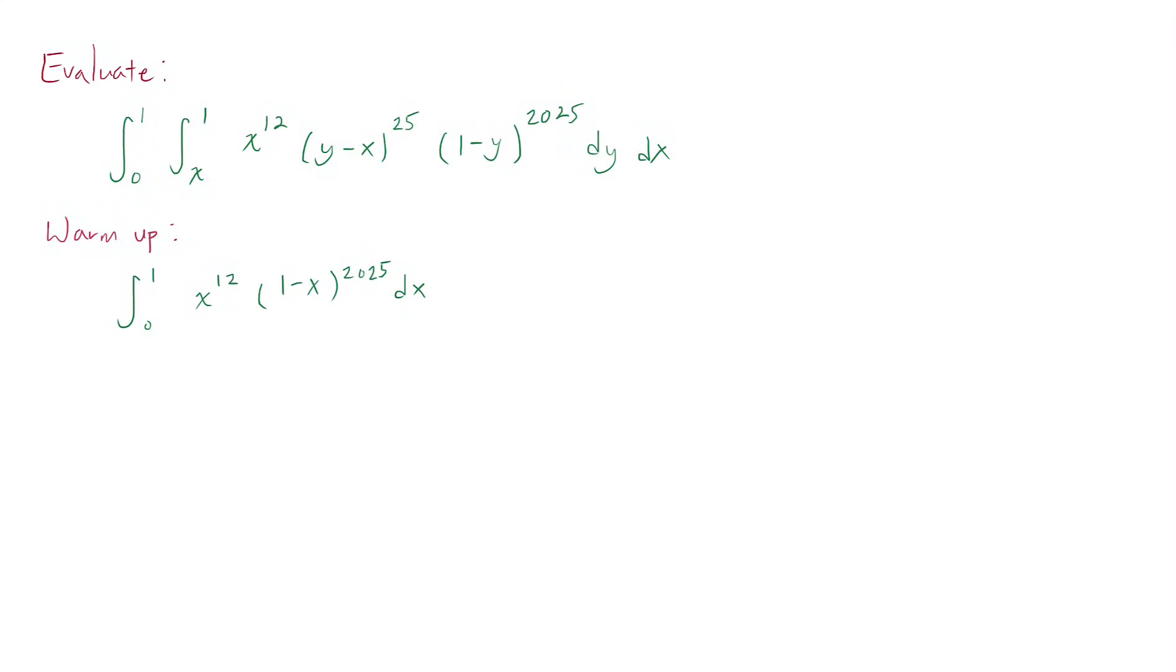Today we are going to try to evaluate this pretty monstrous looking integral. We have a double integral from 0 to 1, x to 1, and I think I'll be posting this around the Christmas time, so I have conveniently the Christmas date written right here. But it's some crazy polynomial, x to the 12th, y minus x to 25, 1 minus y to 2025, dy dx.